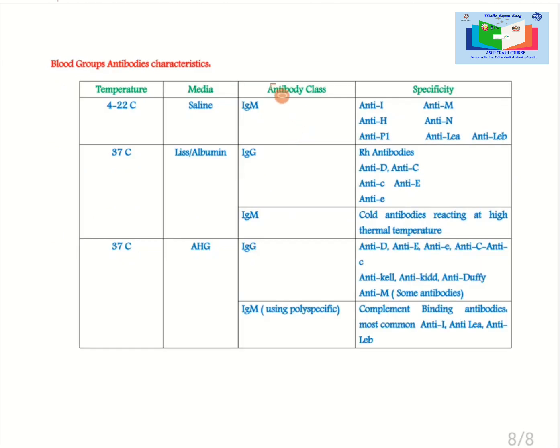Blood group antibodies characteristics. Anti-I, Anti-H, Anti-P1, Anti-M, Anti-N, Anti-Lewis-A and Anti-Lewis-B are IgM in nature. We use normal saline as a media and they best react at room temperature or colder such as 4 to 22 Celsius.